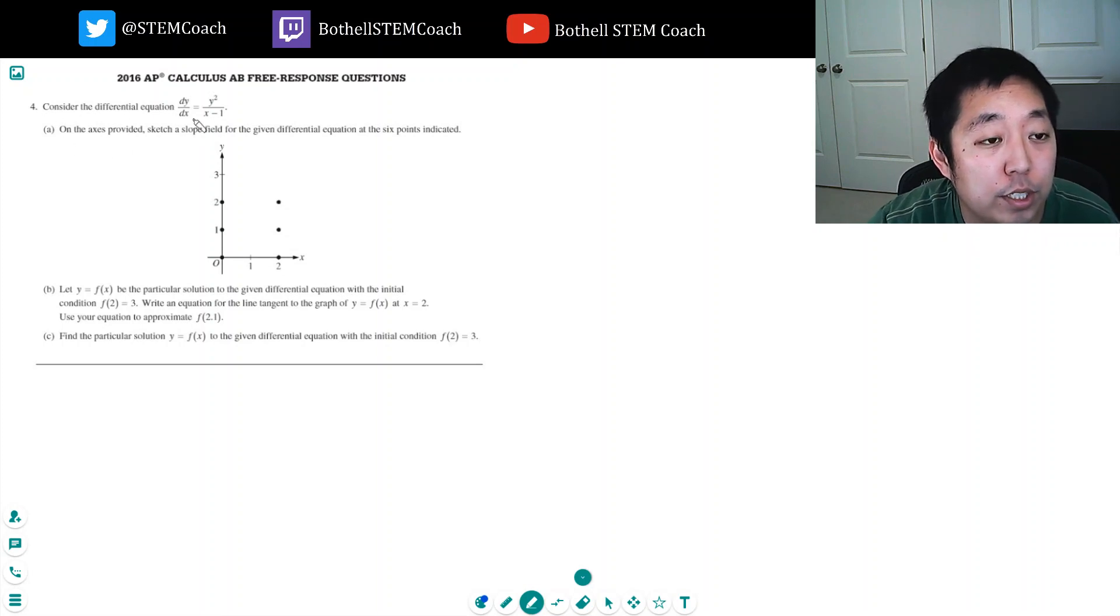So let's look at number 4. Consider the differential equation dy/dx equals y squared over x minus 1. On the axis provided, sketch the slope field for the given differential equation at the six points indicated.